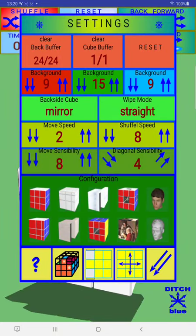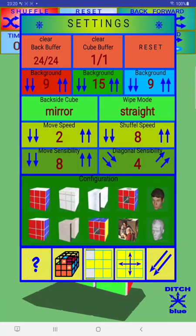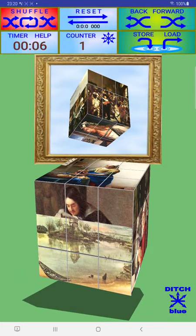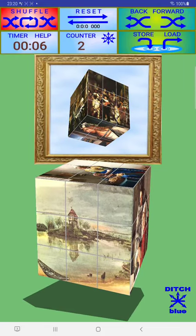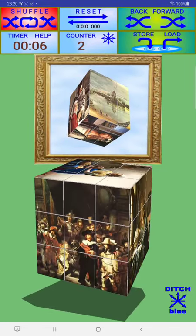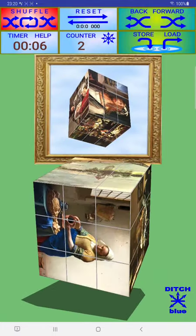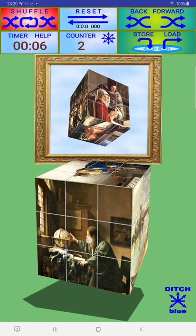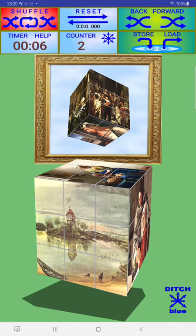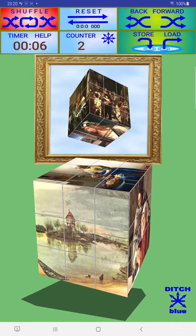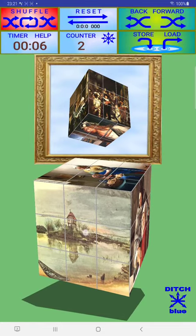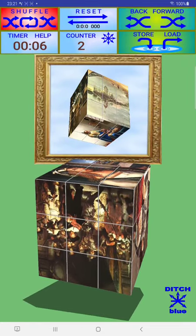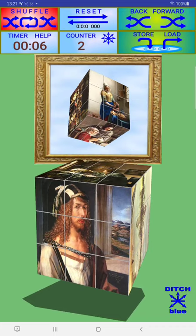But there are other possible configurations. For example, instead of the colors of the standard cube, we use pictures. This one here. I've taken some classic pictures from Durer and Rembrandt and some others. And perhaps you can solve this cube problem, this magic cube problem also with these pictures.